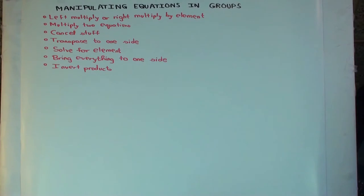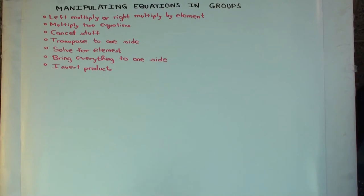What you have to remember is that in groups, we have associativity, we have identity, and we have inverses, but we do not have commutativity. That's something you have to remember, because you're used to doing equation manipulation in commutative worlds where you can be sort of careless about some things. But now with groups, you cannot be careless about those things.